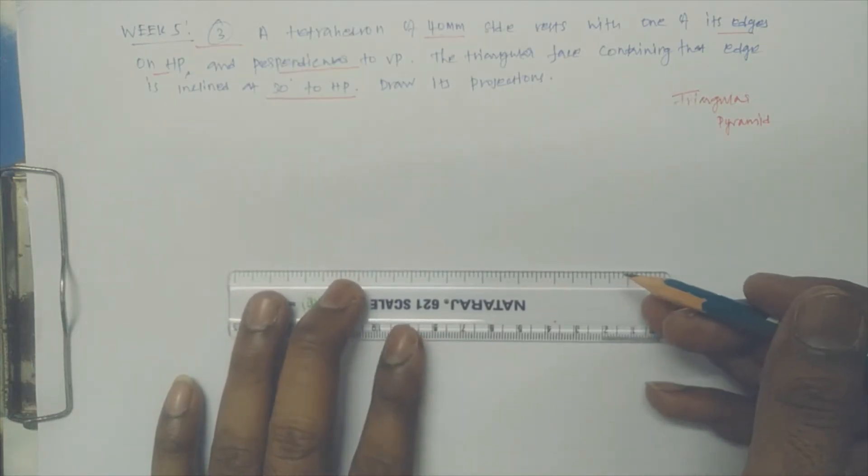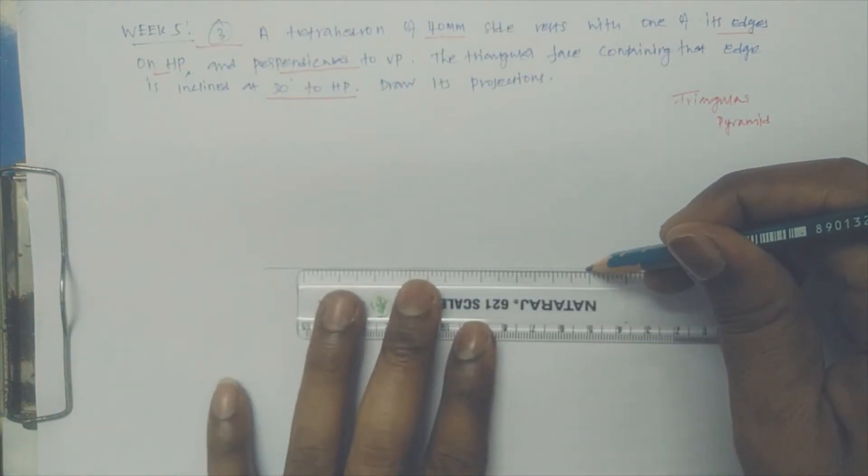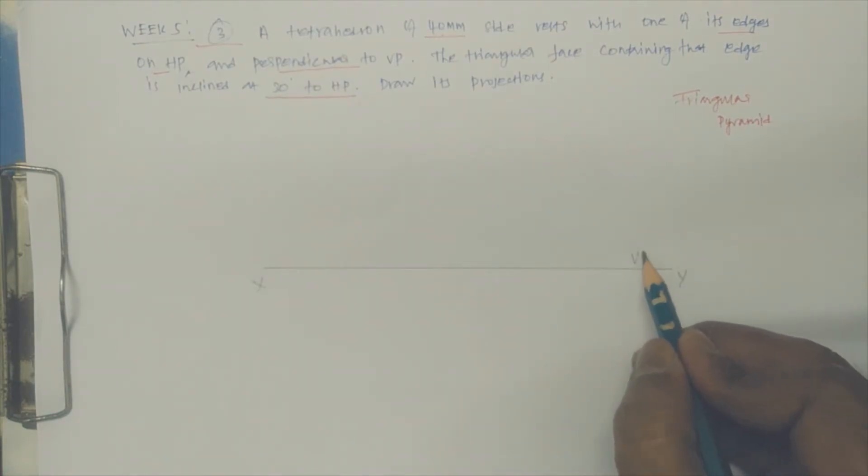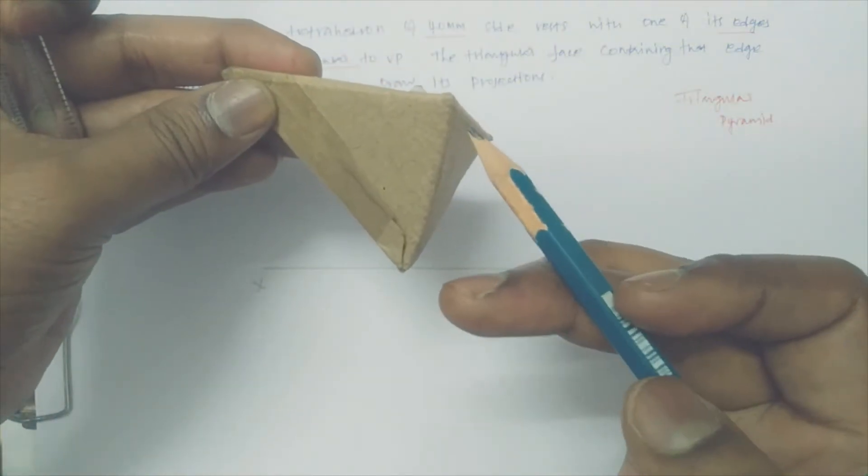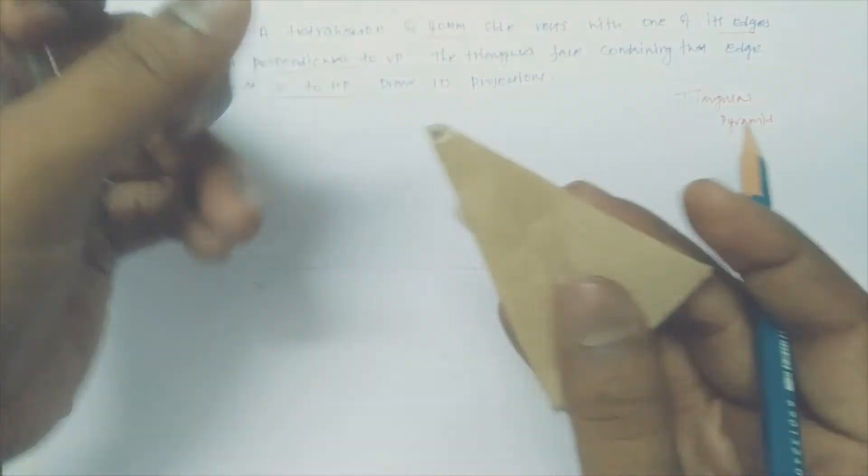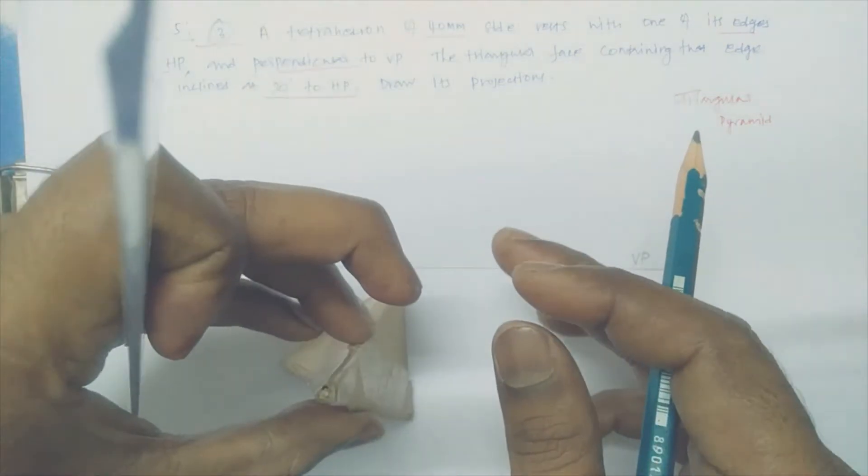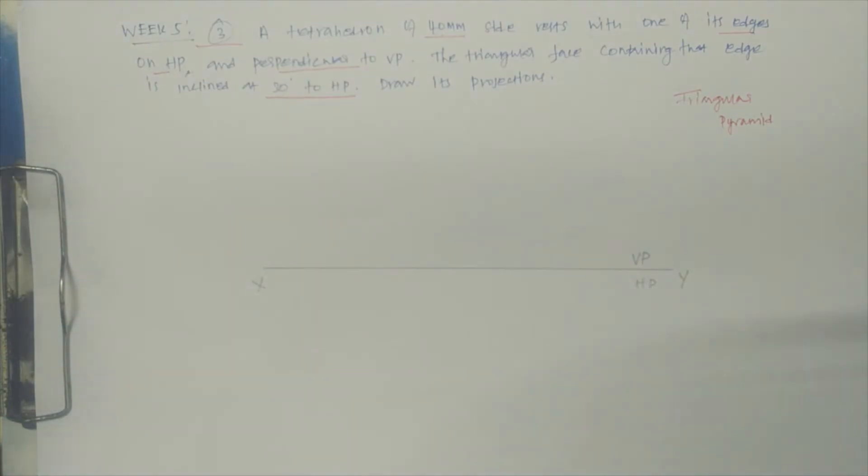As usual, let us make one reference line. This is X, this is Y, and this is VP, this is HP. Four numbers of corners are available in the tetrahedron: one, two, three, and the fourth.